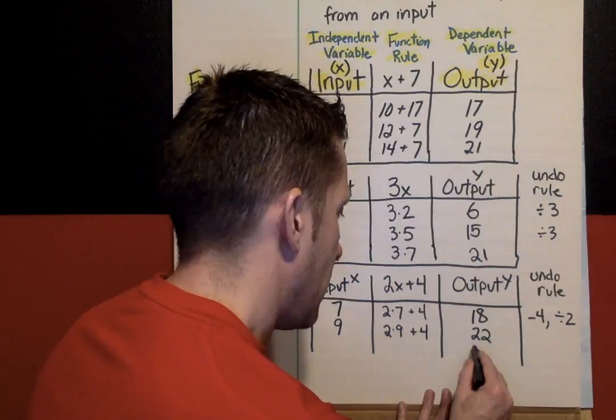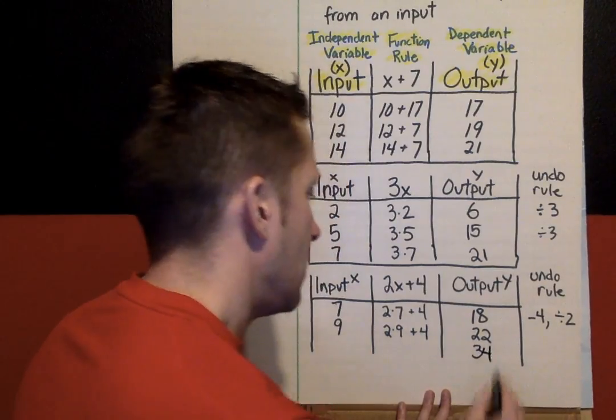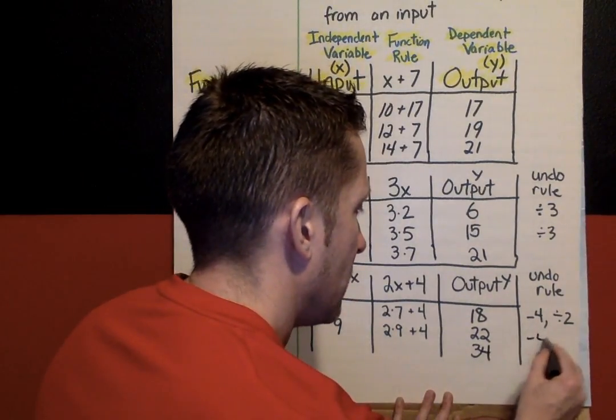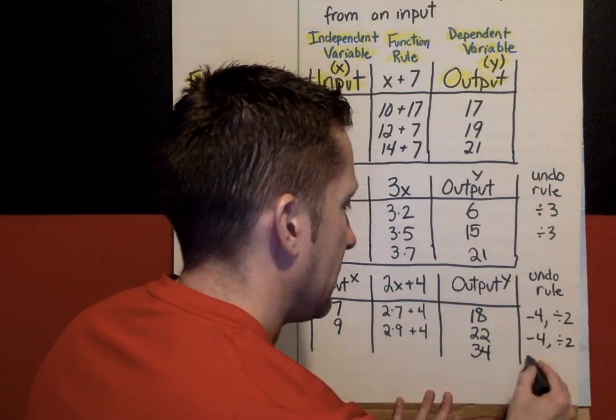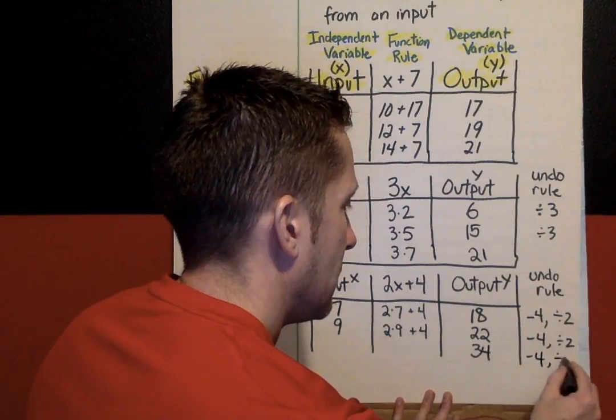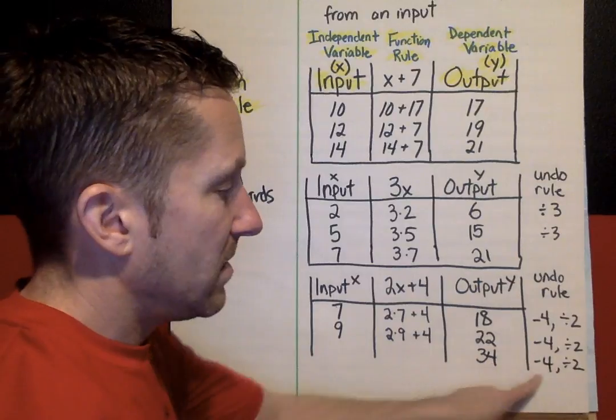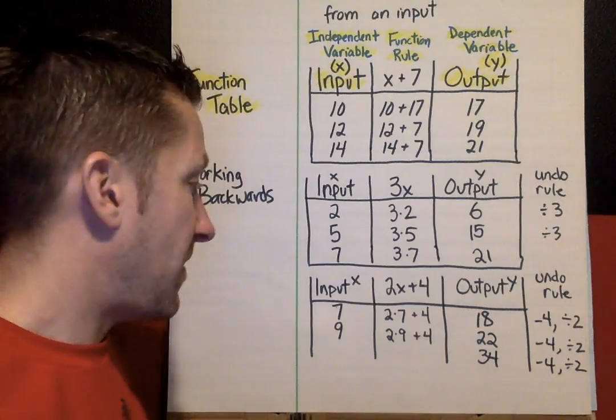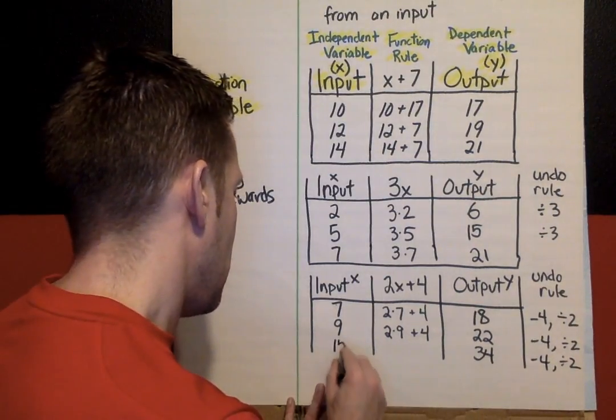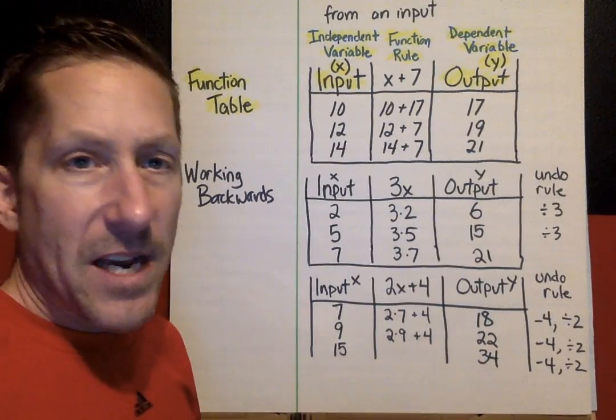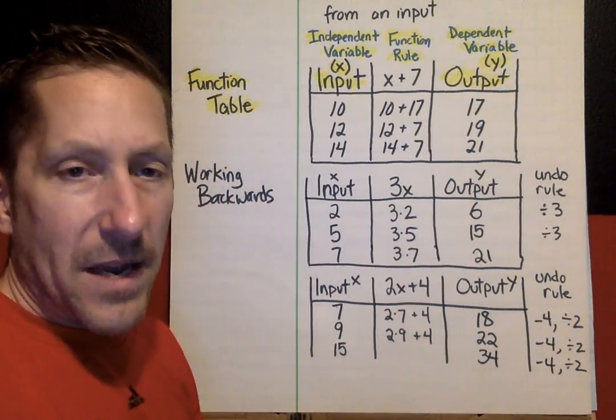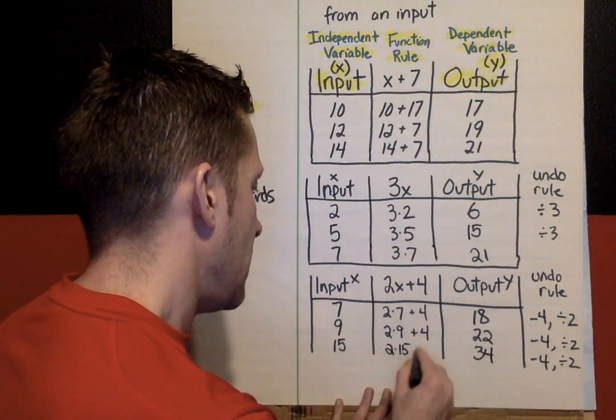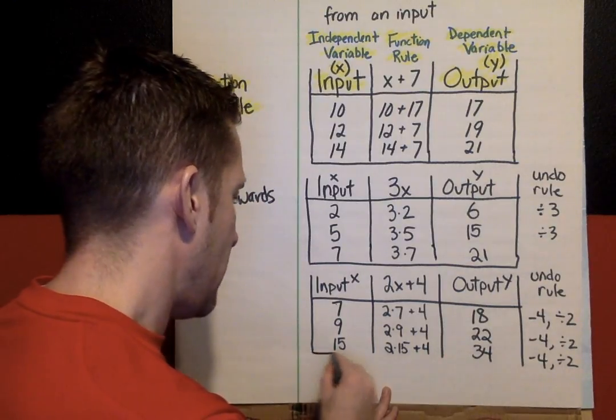What if we had an output of 34? What's our input? If I undo the rule on all these, it's going to look like this. What's 34 subtract 4? That gives me 30. 30 divided by 2 is 15. Again, always check it. Plug it into the rule to make sure it works. 2 times 15 is 30 plus 4, we get 34. It does work.